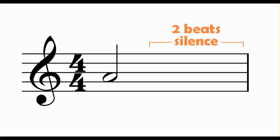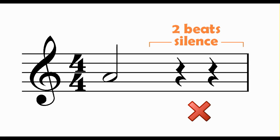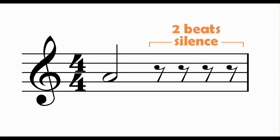Rule 2 tells us that we should write as few rests as possible. If I wanted to have two beats of silence I should use a minim rest, not two crotchet rests or four quaver rests. Writing more rests than necessary makes our music look complicated and makes us work harder than we need to by identifying and counting a multitude of symbols when one would do.